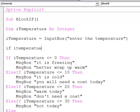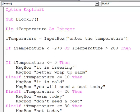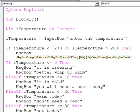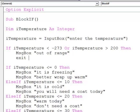If I temperature is less than minus 273 degrees or I temperature is greater than let's say 200 degrees, then we'll tell the user so. Out of range and we'll exit the program.